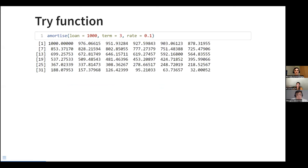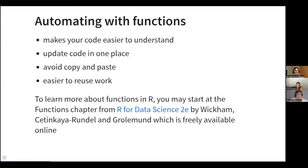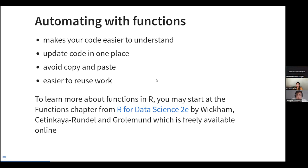That is the concept of abstracting away complexity. If you put your work into functions, it makes your code easier to understand. If the approach changes, you can update it only once and reuse it wherever it's applied. You avoid copy-pasting — you copy only one item rather than the whole script — and it's easier to reuse your work with other projects. If you want to learn more about functions, I recommend the functions chapter from the R for Data Science book.